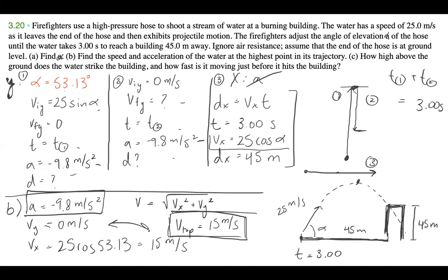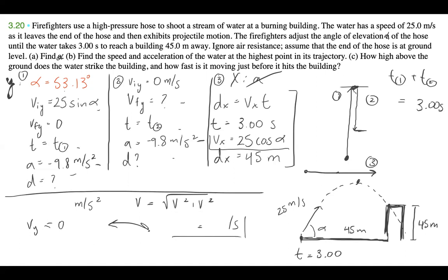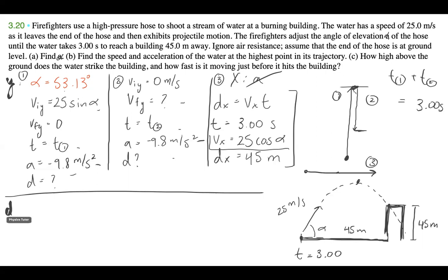For Part C, it asks how high above the ground the water strikes the building and how fast it's moving just before it hits. For Y, we're looking for distance D (the height) and VF. There are two ways to do this — the quick and easy way and the longer way. I'm going to do the quick and easy way.